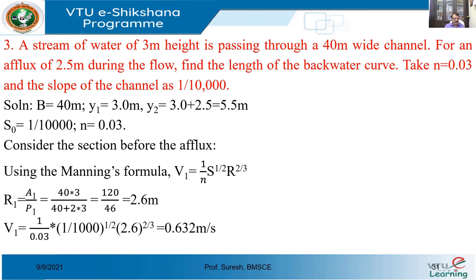Knowing these values, we calculate the velocity at section 1-1. v1 = (1/n) × S^(1/2) × R1^(2/3) = (1/0.03) × (1/10,000)^(1/2) × (2.6)^(2/3). Note: there is a typo in the working — it shows 1 in 1000, kindly correct it to 1 in 10,000. Simplifying this, v1 works out to be 0.632 meter per second.